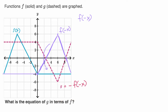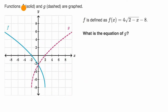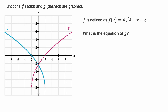Let's do one more example. Once again, they've graphed f, they've graphed g, and f is defined as this right over here. What is the equation of g? They want the actual equation, not just in terms of f. You can see pretty clearly that this is a reflection across the y-axis. A reflection across the y-axis means g of x is equal to f of negative x.